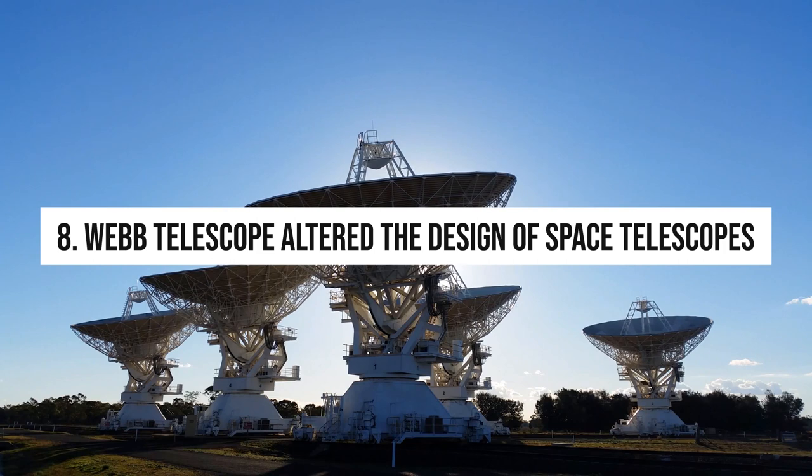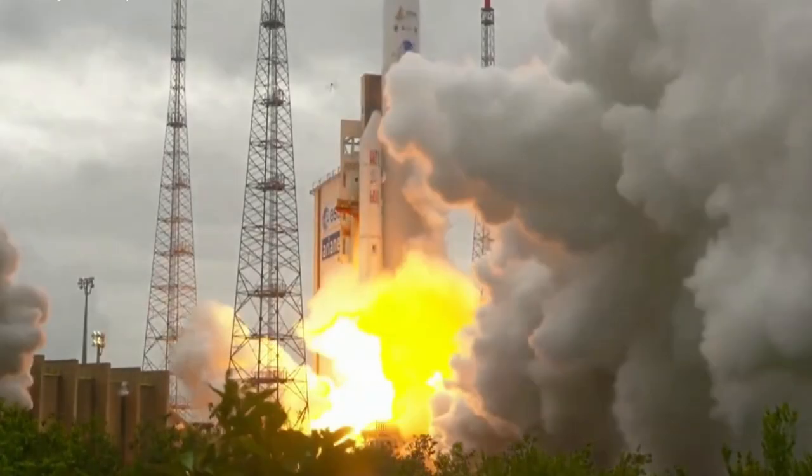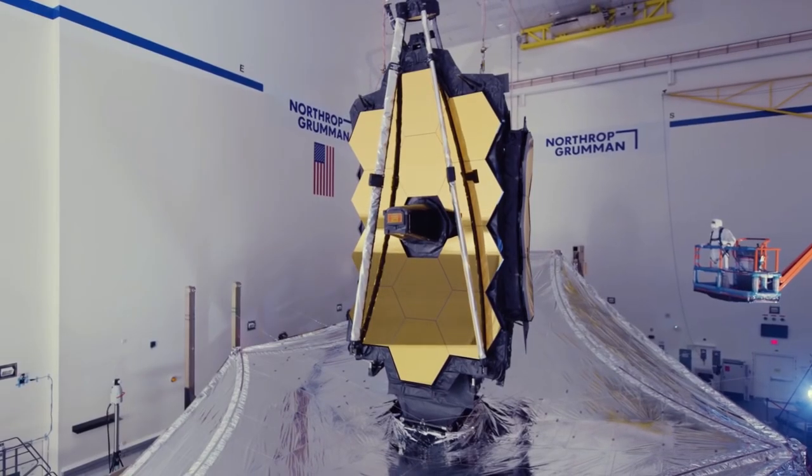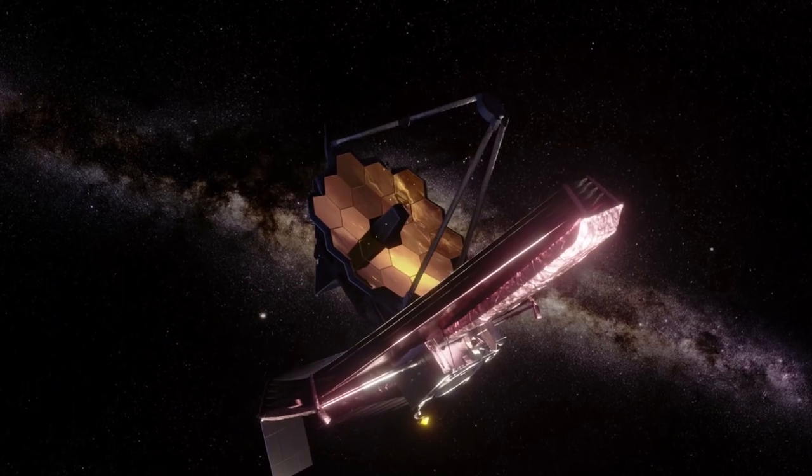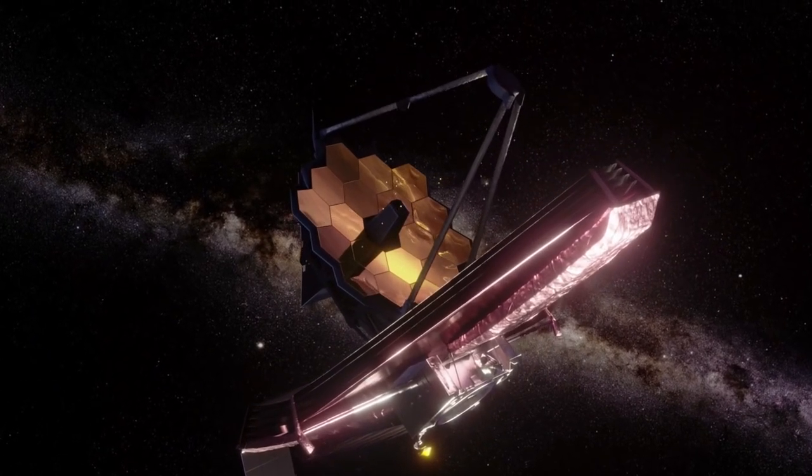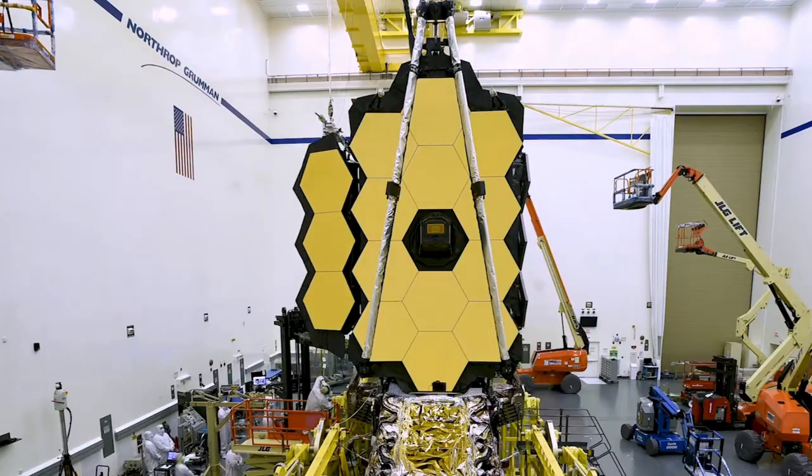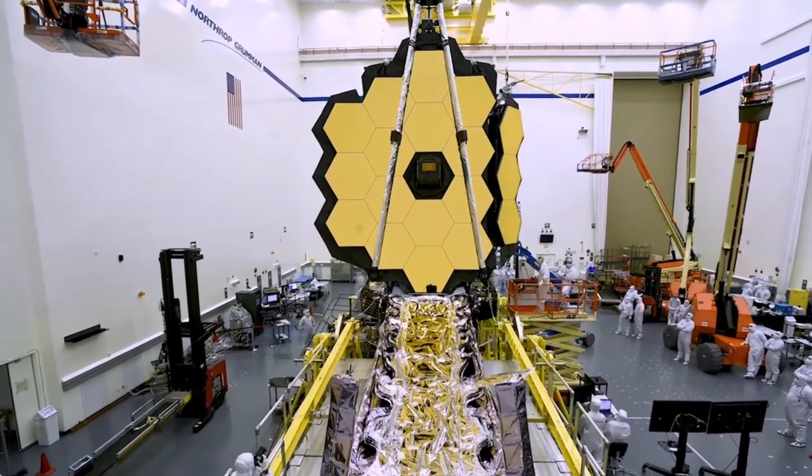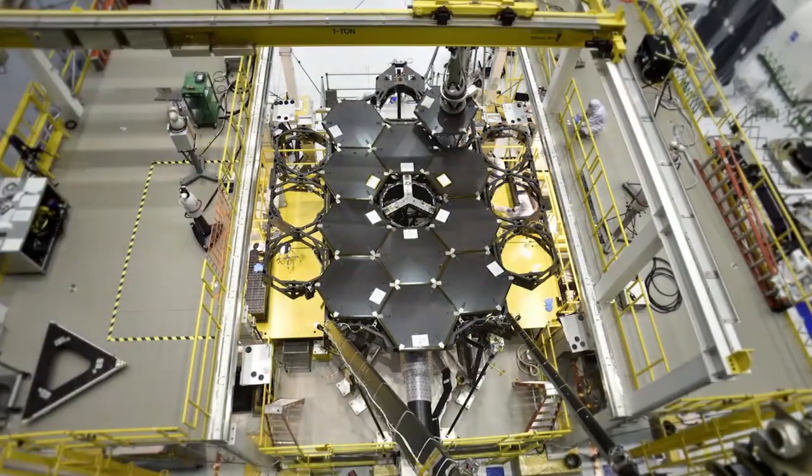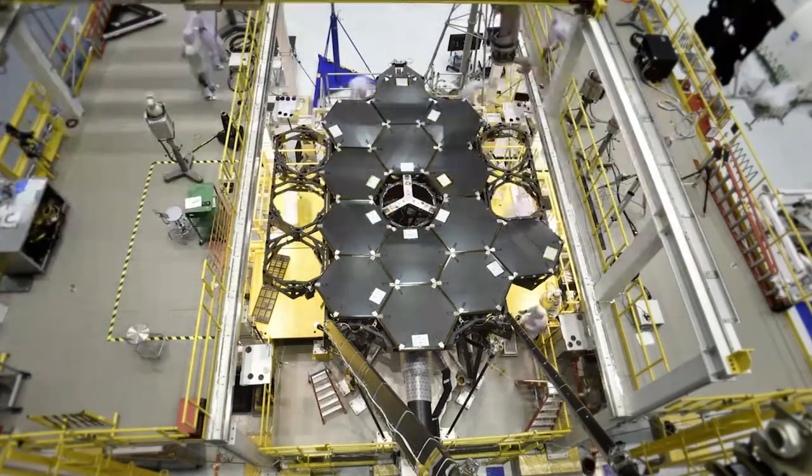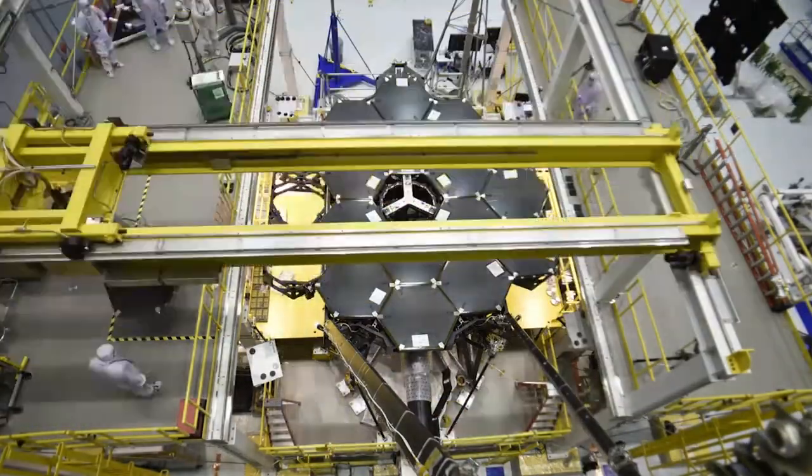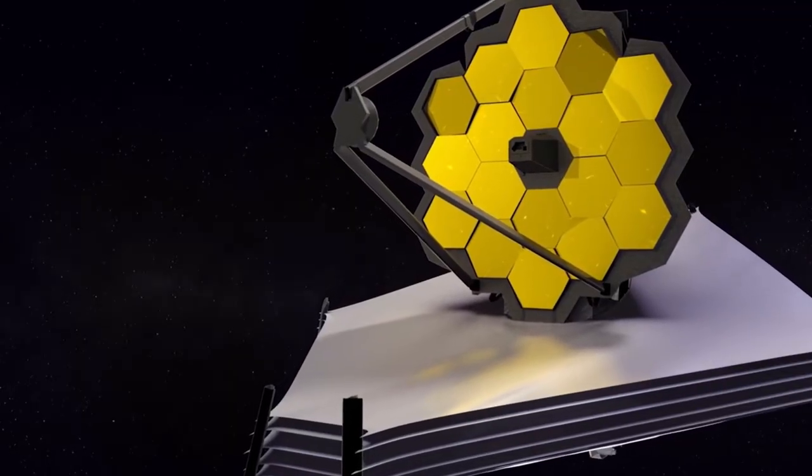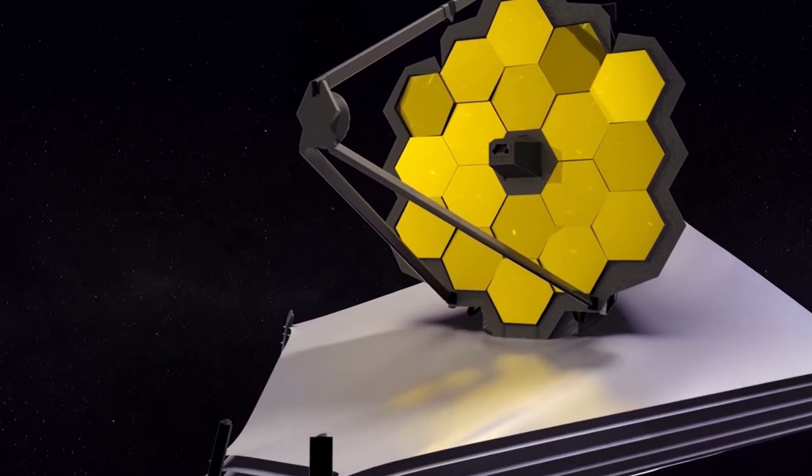Number 8. Webb Telescope altered the design of space telescopes. Webb Telescope's launch was expensive and time-consuming. It was years late and billions over budget, but its groundbreaking design has changed space telescopes. The telescope's huge golden primary mirror, produced by unfolding 18 hexagonal parts, was marvelous engineering. The time and effort put into developing and constructing the telescope will yield dividends in the form of both the breakthrough scientific discoveries it will make and the ways in which it will influence the design of future generations of huge space observatories.